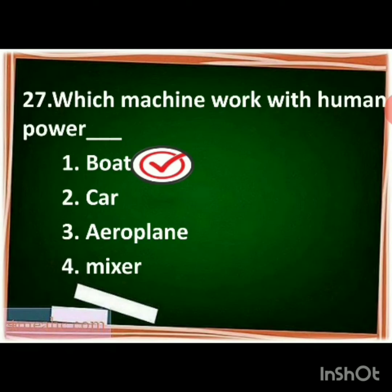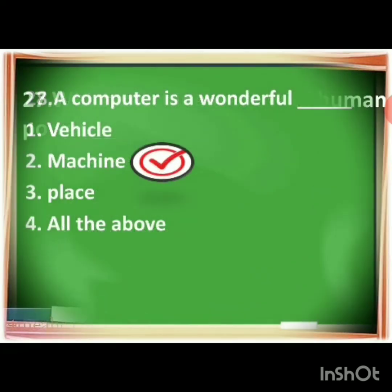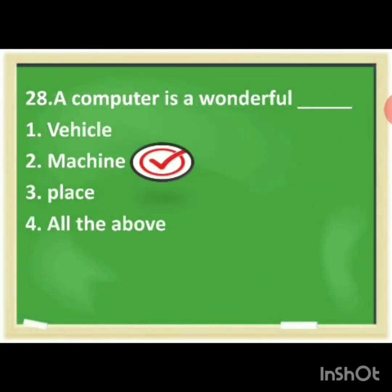Which machine works with human power? The options are boat, car, aeroplane, mixer. The correct answer is boat. You have to make the tick mark for boat. Next: a computer is a wonderful dash.